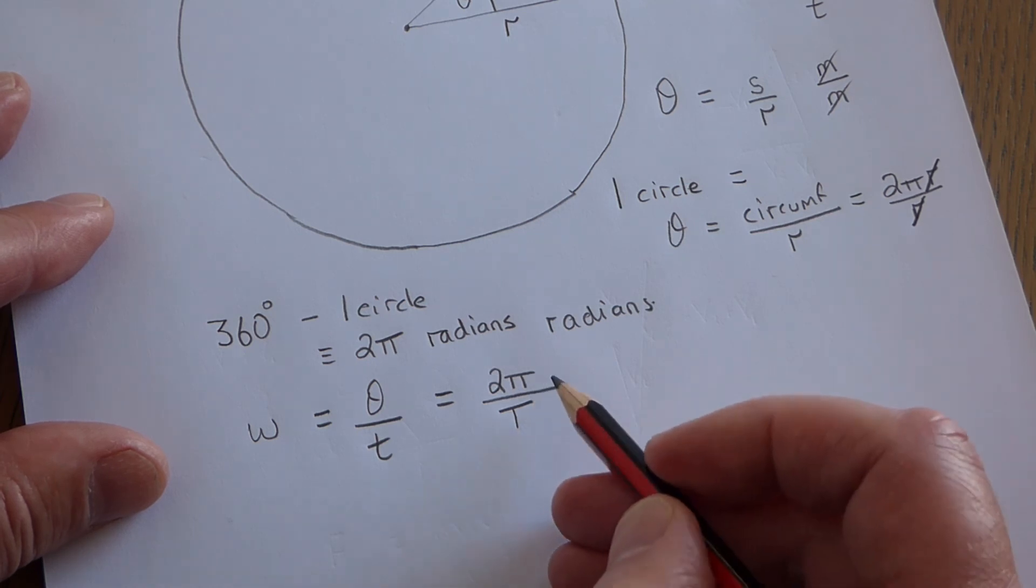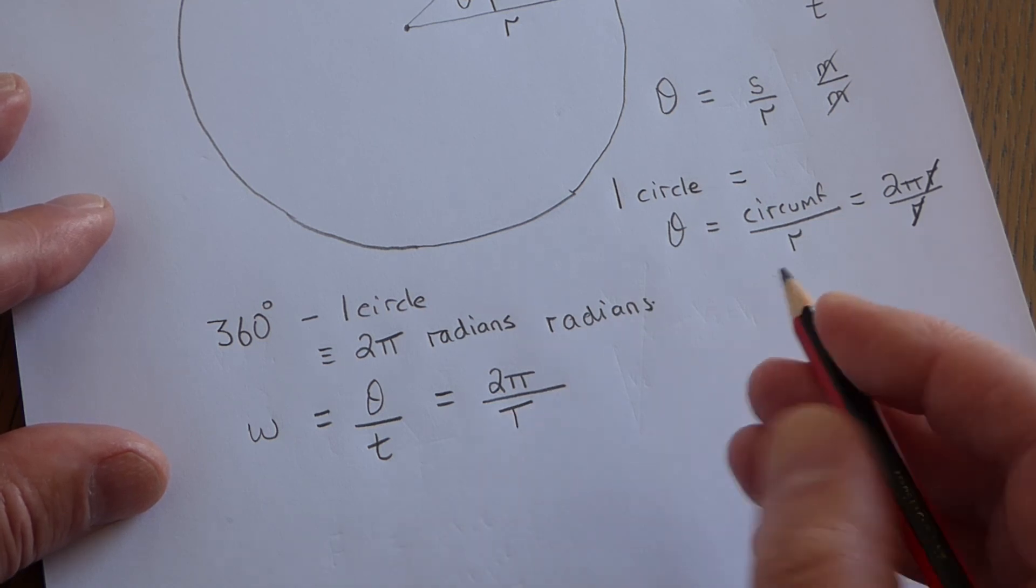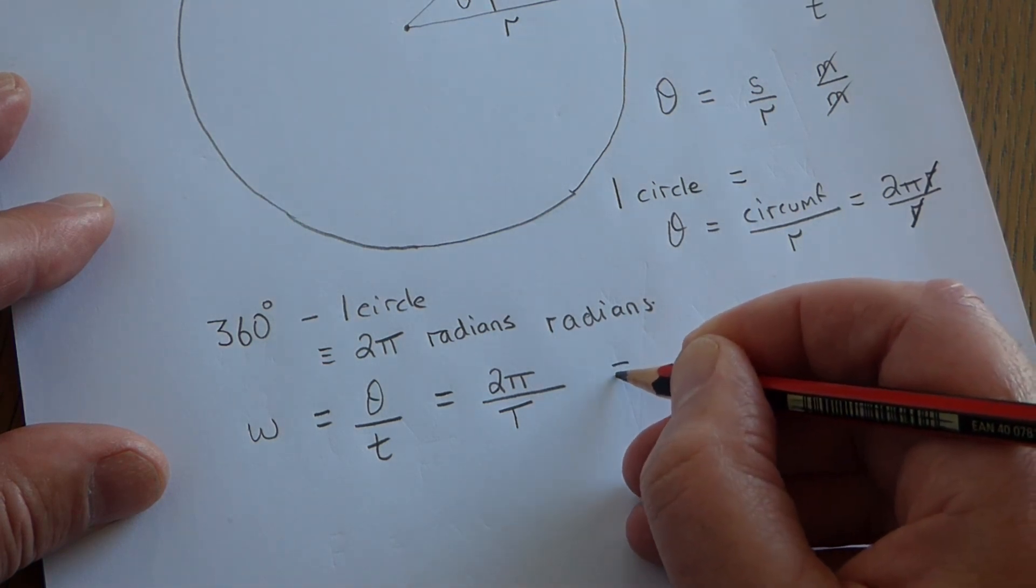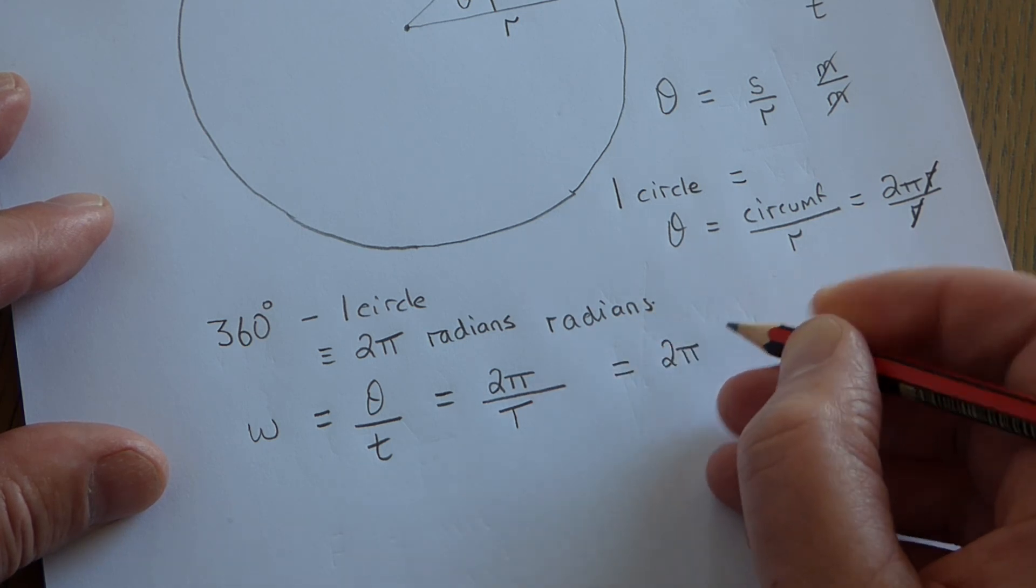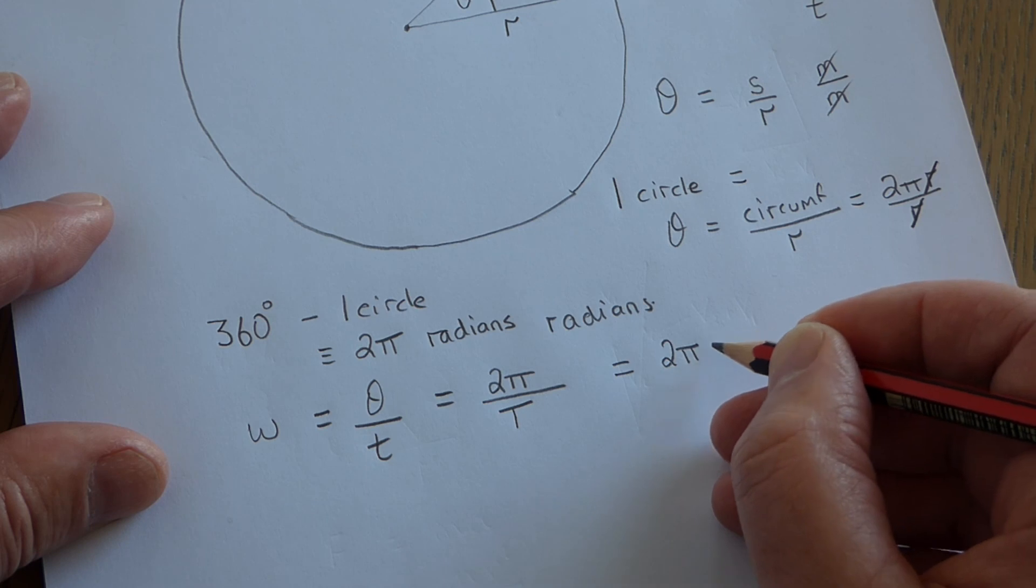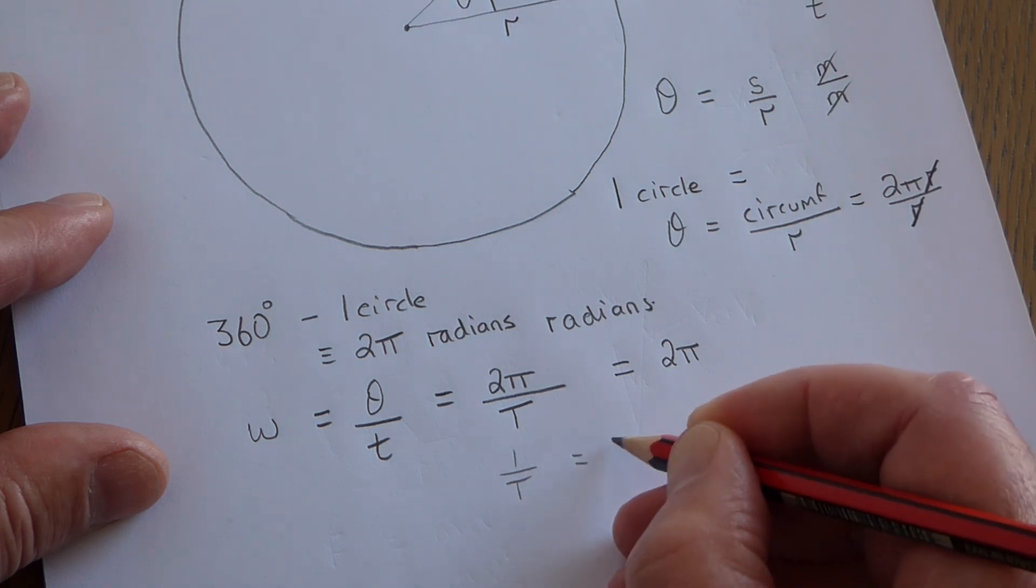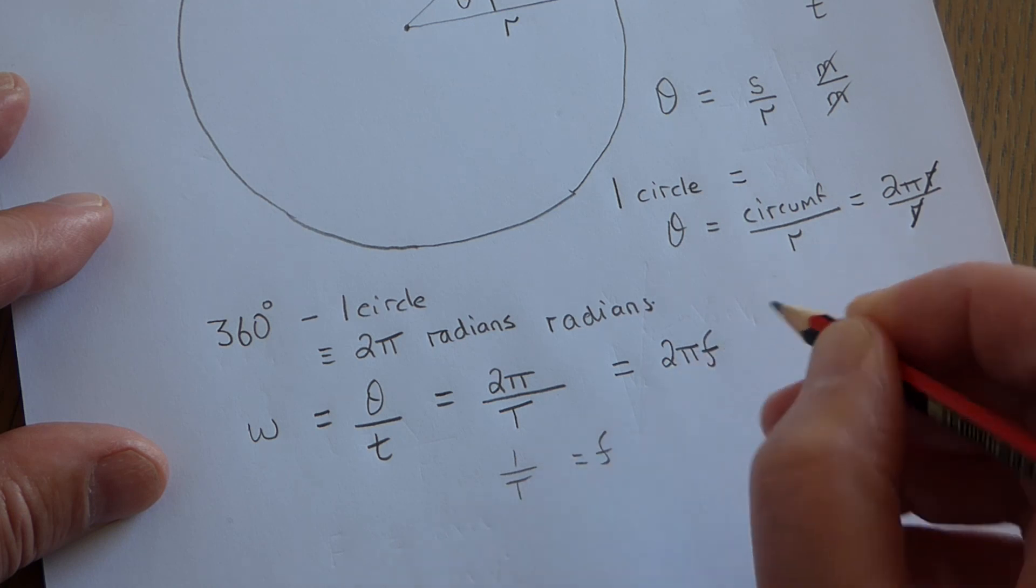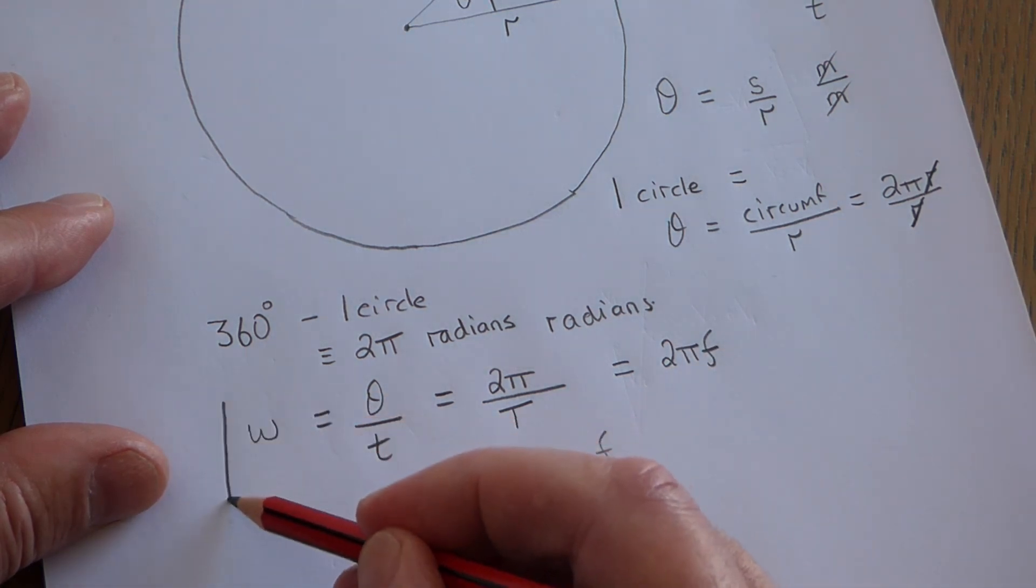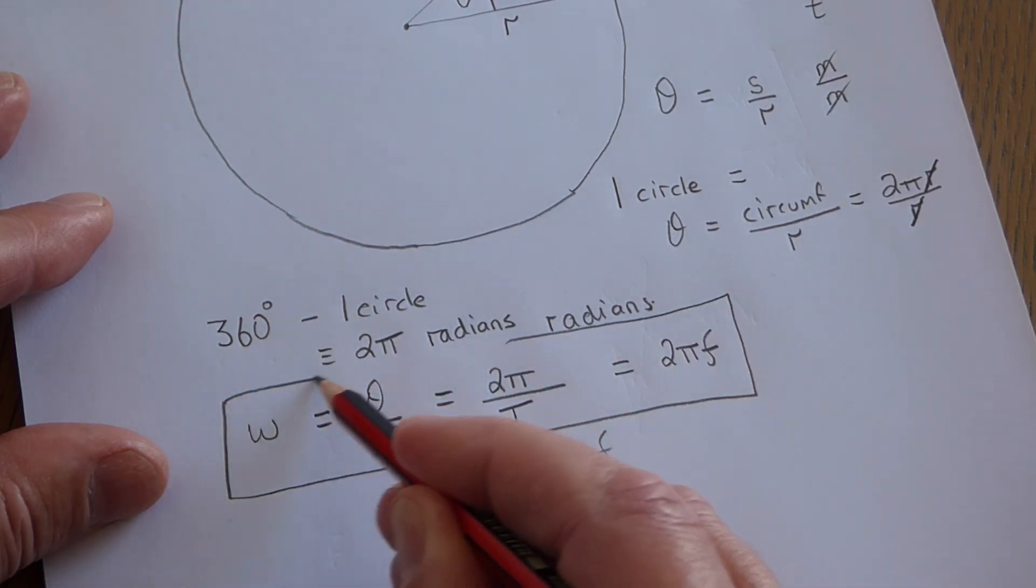But the point is, if whatever's going round in a circle, if it goes round and does one orbit, you divide by the periodic time. And that means that you can also write it like this. One over the period, as we know from our waves knowledge, is equal to the frequency. So one over the periodic time is the frequency. So 2π over T becomes 2πf. And those are the three versions of angular velocity which we are going to find very useful indeed.